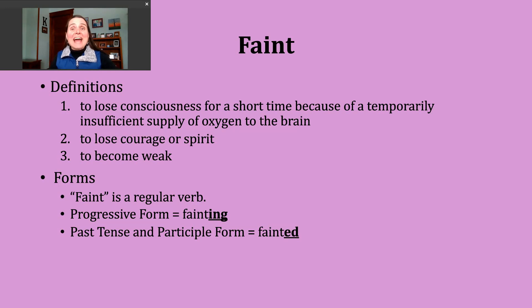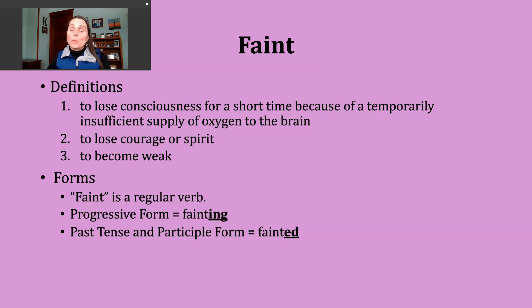You should know that faint is a regular verb. To make the progressive form, all you need to do is add -ing to form fainting. The past tense and participle forms can be made by adding -ed. Our base verb faint ends with a T sound, which means when you add -ed, you're going to make an -id sound. This adds an extra syllable, so the past tense and participle form should sound like this: fainted.